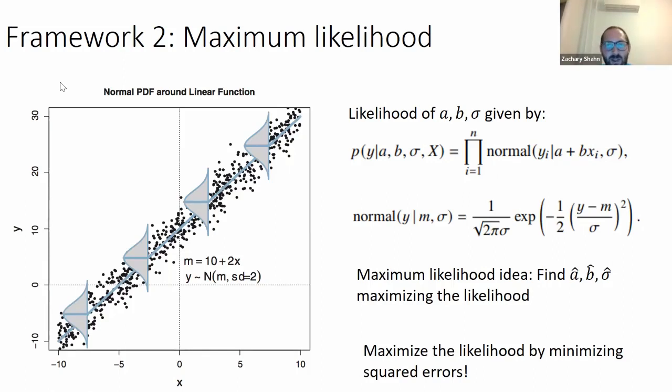Framework two is called maximum likelihood. The idea here is that you should choose the A and B defining a line such that the probability of observing the points that were actually observed is maximized. Each point, the probability of observing a given Yi, given that you observed a certain Xi, and given the values of the regression parameters, is the normal density. The density for the outcome Yi is normal with mean equal to the value of the line at Xi, so a plus b Xi, and then with standard deviation sigma. The probability of the whole vector of Y, because they're independent, is just the product of the densities of each of the Y's.